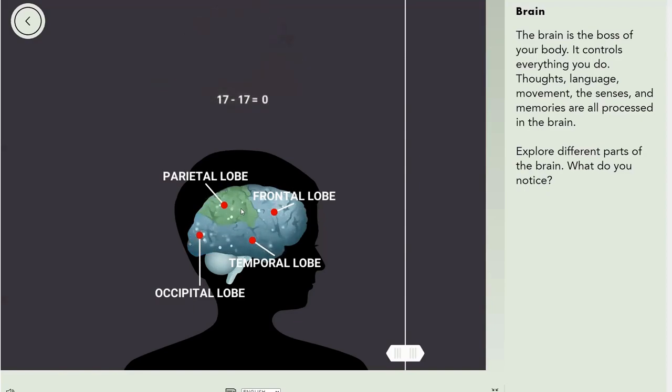Parietal lobe. Logic, senses, and location. Seems like that. And the frontal lobe controls your circulatory system, your taste, your feelings, and whatever this is. We don't need to go into detail.